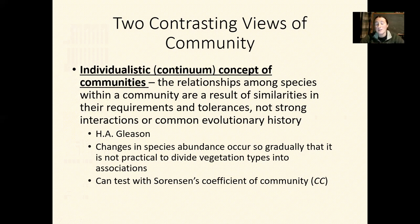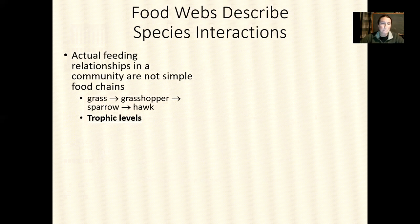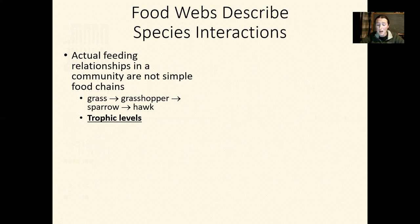If you wanted to test these two contrasting views, there is math you can do — there is no one answer; it's a little bit of both and you can actually test which one is being experienced. Regardless of whether the community is more organismic or more individualistic, there are a lot of different interactions going on within communities. It is a challenge to represent all of those interactions, and one of the more simplistic ways is a food chain — grass feeds the grasshopper, the grasshopper transfers energy to the sparrow, the sparrow to the hawk.